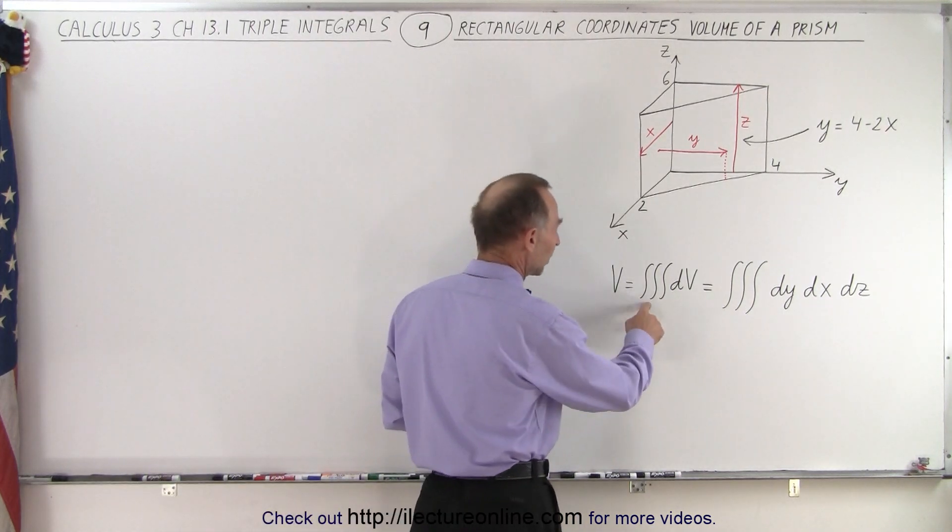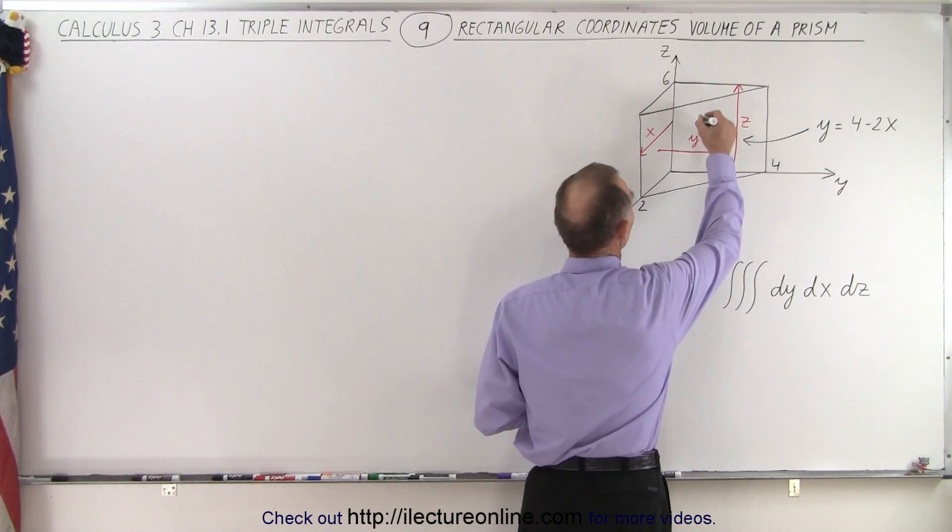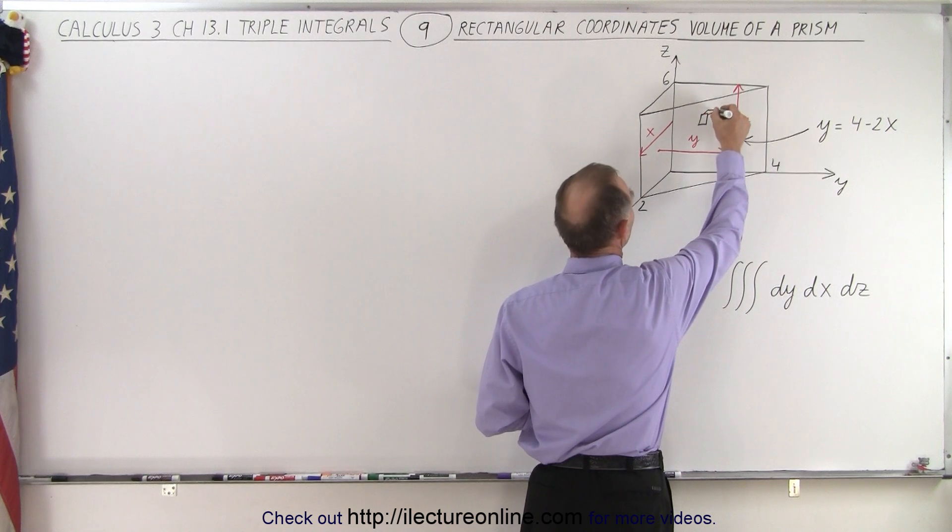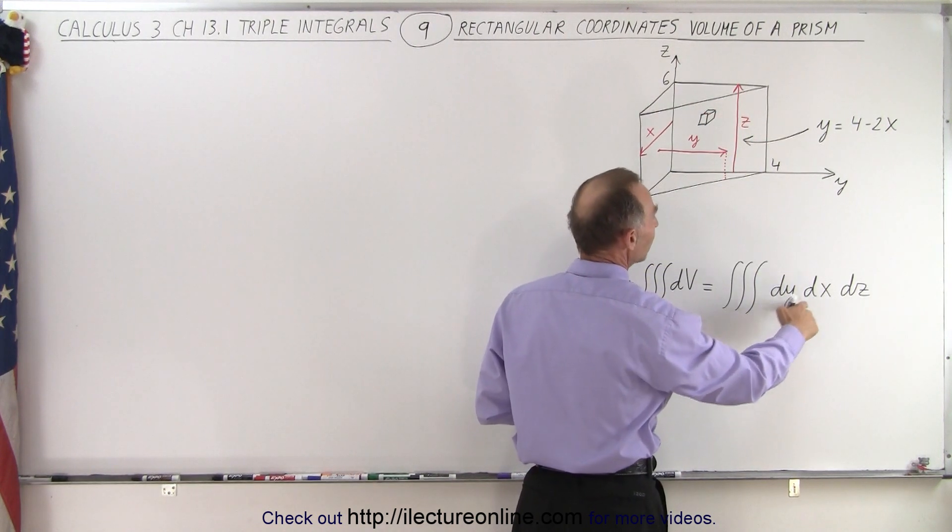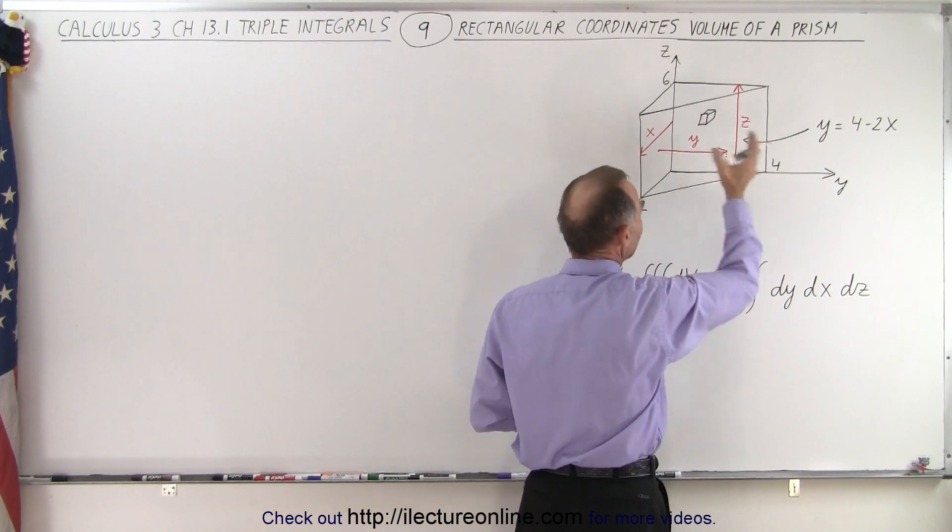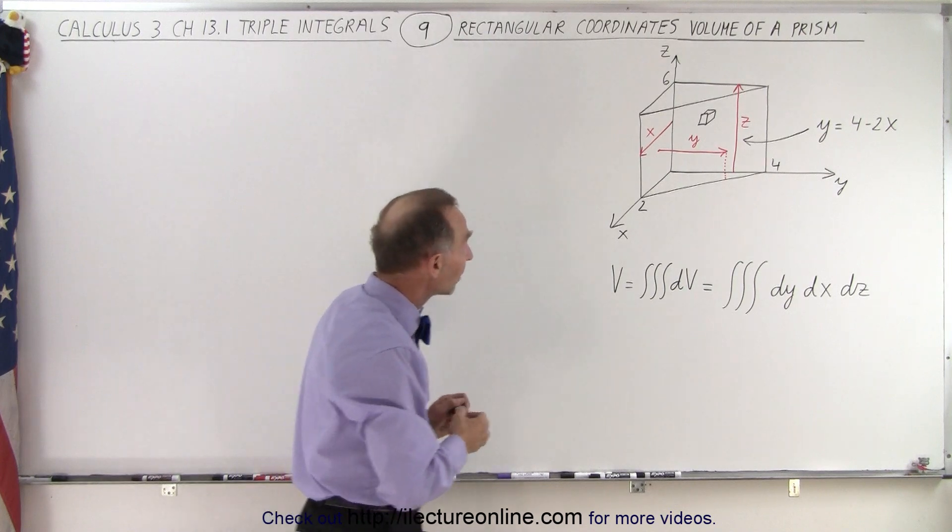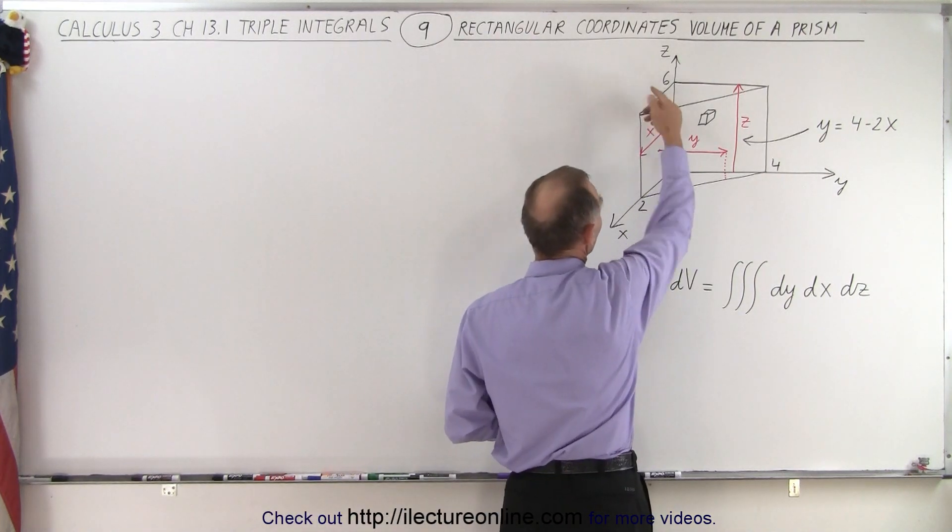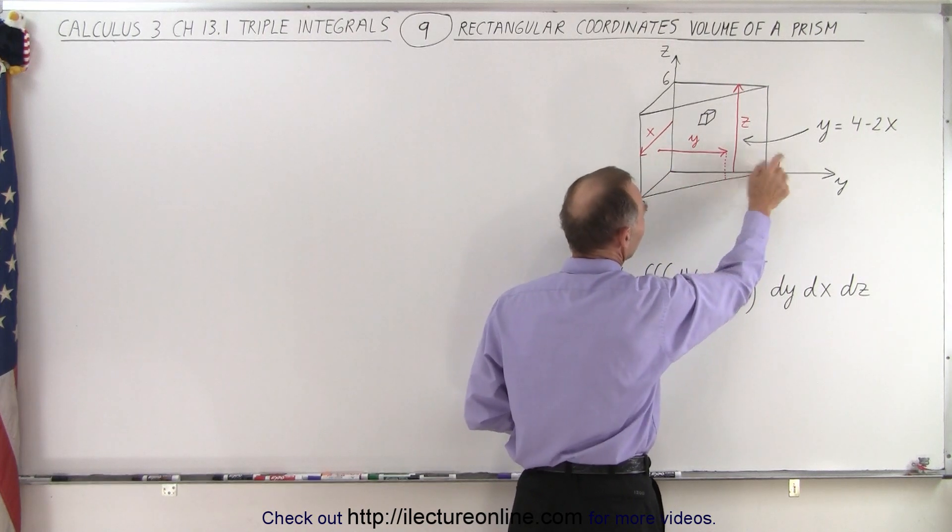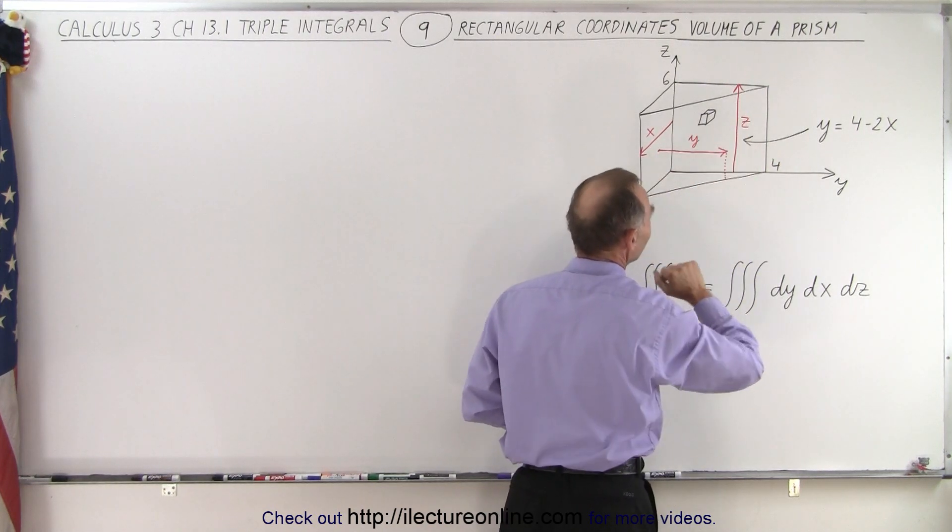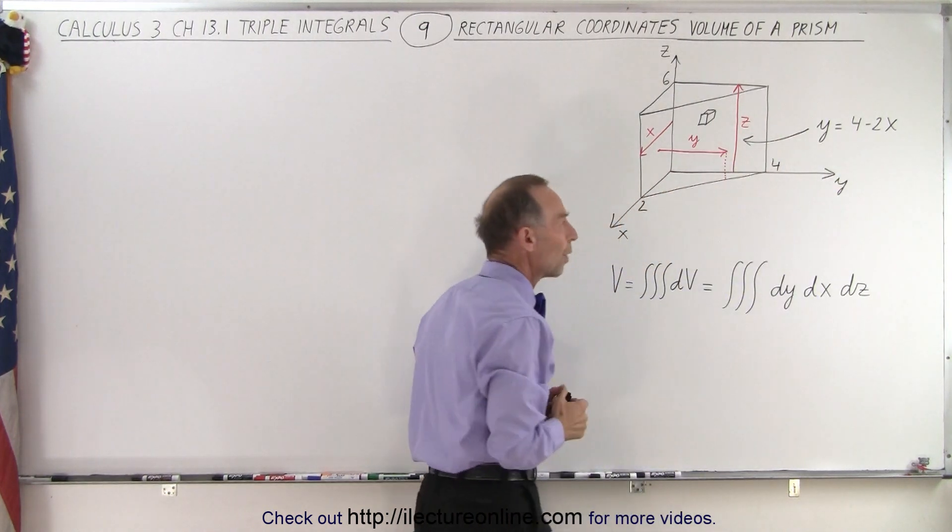So the volume is going to be the triple integral of a small volume element, which is essentially a small cube that has dimensions dy, dx, dz. And we're going to integrate that in three directions. Now notice that the height of the prism is 6. From the origin to here is 2, and from the origin out to here is 4. But then we have the slanted side. And if you think about it, you can see that on the slanted side that y equals 4 minus 2x.